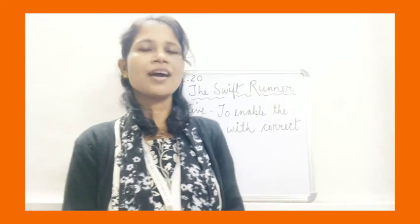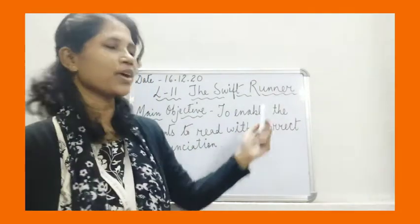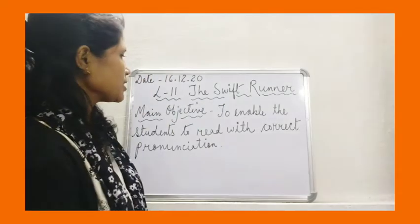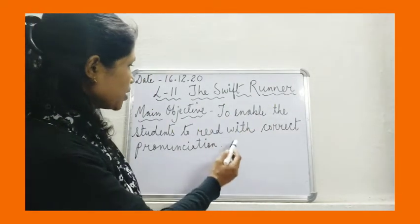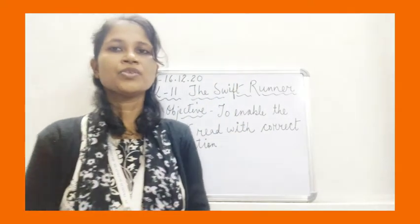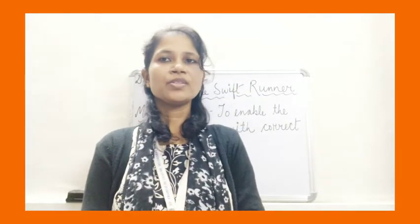Today in this class, we are going to start a new lesson, that is Lesson 11, The Swift Runner, from our English textbook. The objective of today's class is to enable the students to read with correct pronunciation. Today I am going to do the reading of the text, so please listen to me carefully and try to understand it, so that you can read and pronounce the words properly.